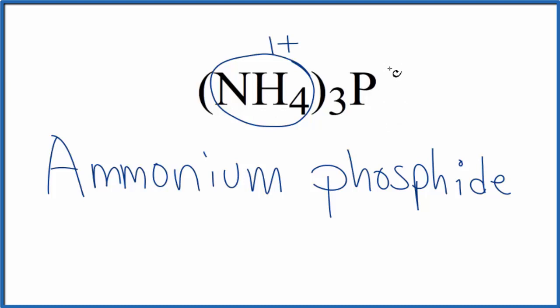And then we have the phosphide ion, and that will always have a 3 minus ionic charge. If you were asked to write the formula based on the name, again, you have to know that NH4 is the ammonium ion that has a 1 plus ionic charge. Since the phosphide ion, this phosphorus here, will form ions with 3 minus as its ionic charge.